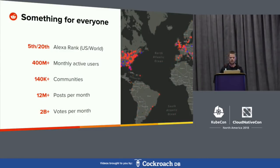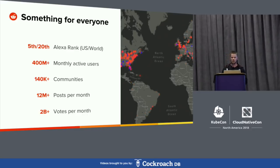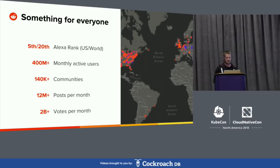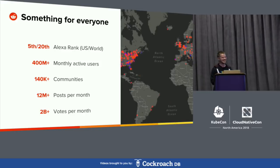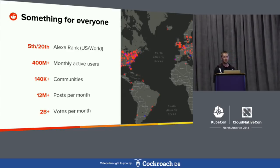Through a combination of user-driven moderation and voting, subreddits end up being curated sources for the things that interest you. Due to a monthly active user base of over 400 million, we are home to subreddits that cover just about every imaginable topic — news, politics, sports, technology, music, underwater basket weaving, and of course whatever more obscure stuff you might be into, but no judgment here. You'll be able to find a home in one of our 140,000 communities.